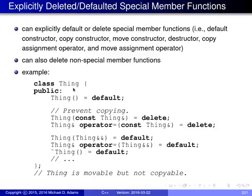There is a very nice solution to this problem: we can use what's called a deleted special member function. We write the declarations for the copy constructor and copy assignment operator and append '= delete'. This tells the compiler we are not going to provide these functions and we don't want the compiler to automatically generate them either, which prevents copying for the class entirely.